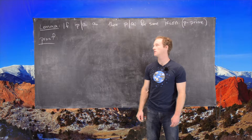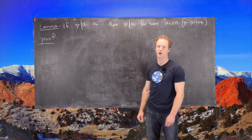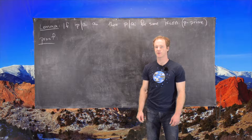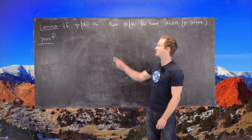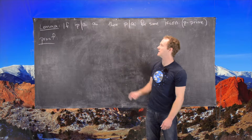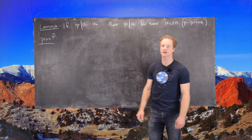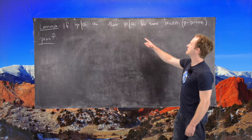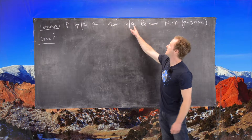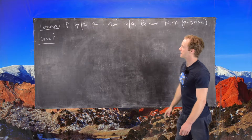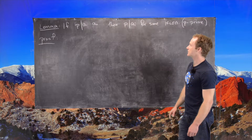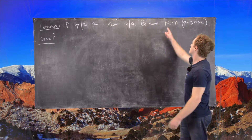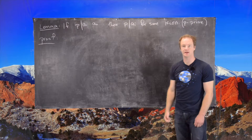In this video we're going to look at another preparatory lemma for the proof of the fundamental theorem of arithmetic. We're going to prove that if p divides a product a1 through an, then p must divide one of the terms in the product — that is, p divides ai for some i between 1 and n.